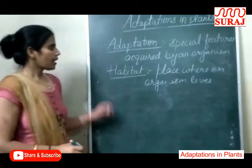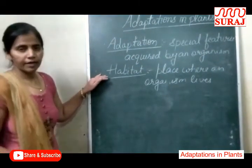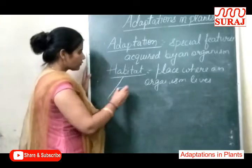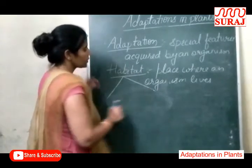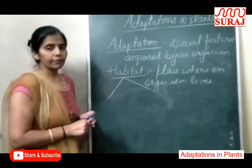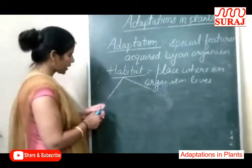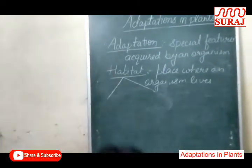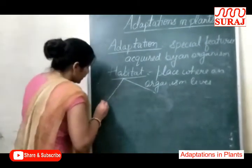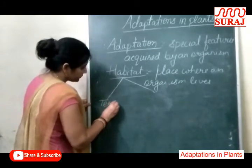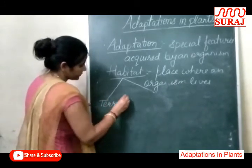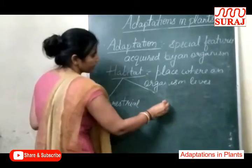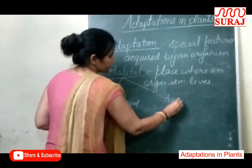On the basis of Habitat, we have grouped plants into two types. Habitat ke basis pe humne plants ko two types mein divide kiya hai: Terrestrial Plants and Aquatic Plants.